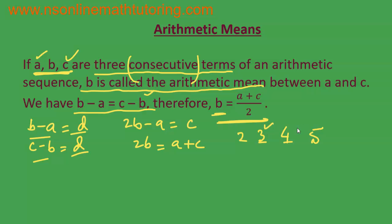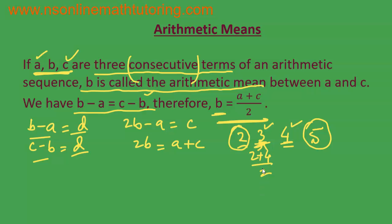We may also be asked to insert two arithmetic means between 2 and 5, and the answer is the same: 3 and 4. Why? Because 2 plus 4 divided by 2 equals 3, and 3 plus 5 divided by 2 equals 4. That is why 3 and 4 may be considered arithmetic means between 2 and 5.